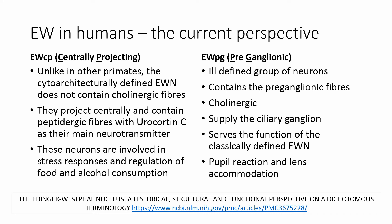Recent retrograde tracer and connection studies, as well as neurochemical analysis, show that there are two distinct groups of neuronal collections that contribute to the Edinger-Westphal nucleus. Unlike in other primates, the cytoarchitecturally defined Edinger-Westphal nucleus does not contain any pre-ganglionic cholinergic fibers. Instead, they project centrally to different parts of the brain and even to the spinal cord.